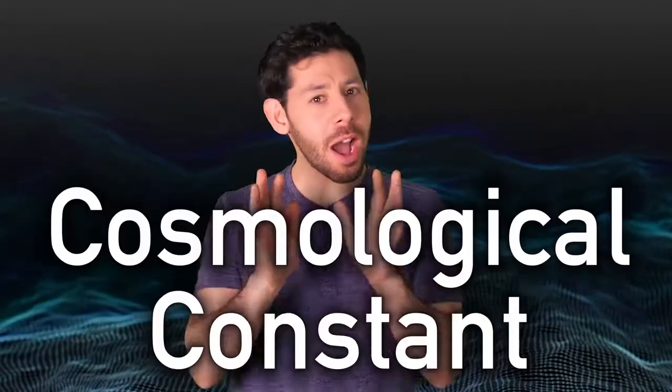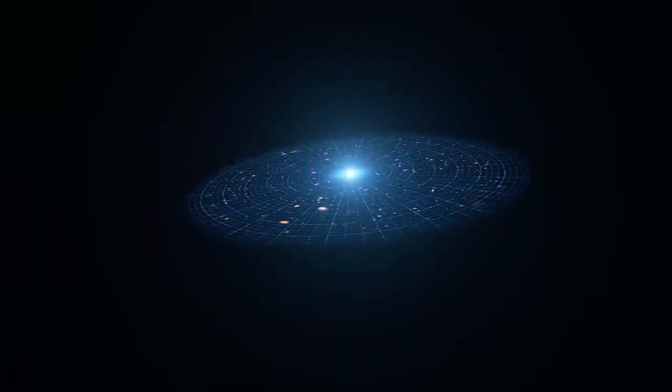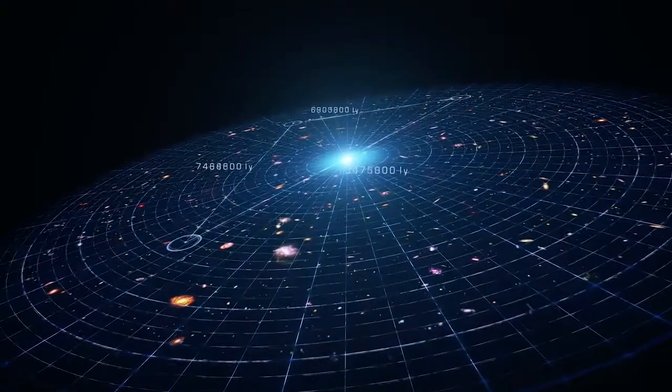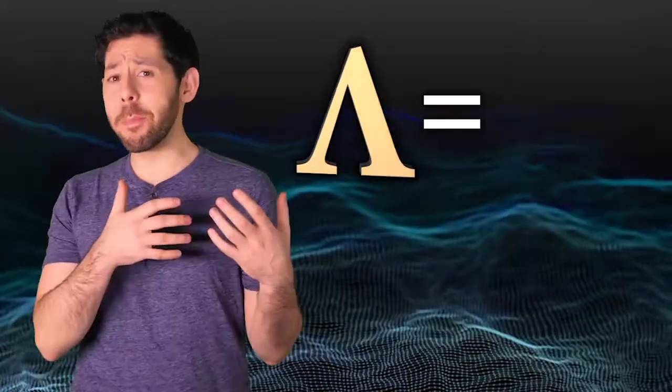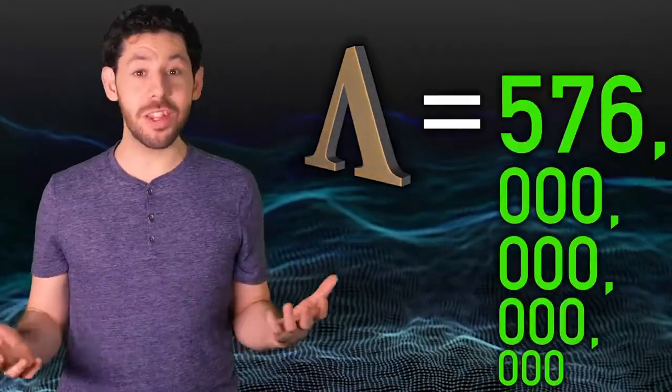The most baffling number in all of physics is the value of the cosmological constant, denoted lambda. It's the measured density of dark energy, and it controls how fast the expansion of the universe speeds up or slows down. If lambda were a positive number, like 1 or 56 or 576 trillion, then the universe's expansion would have sped up so fast that all the particles in the universe would have exploded away from each other in the first second of the universe.